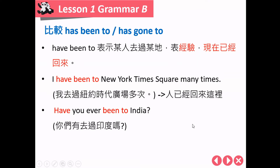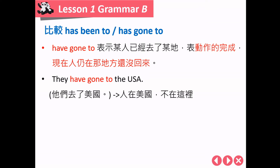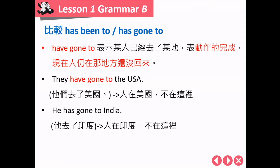Have gone to 则是表示这个人去了那个地方，而且还没有回来，强调动作已经完成了，人在那个地方。例句：They have gone to the USA，表示这些人现在人在美国，不在说话的现场。He has gone to India，表示这个人现在就在印度。总结：have been to 强调经验；have gone to 强调动作。这两个片语很容易搞错，希望同学能够清楚分辨。